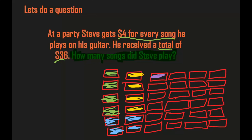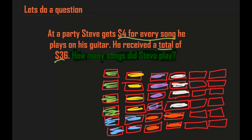Continuing with more sets of four: next is purple — 1, 2, 3, 4. Then orange — 1, 2, 3, 4. Then white — 1, 2, 3, 4. Then pink — 1, 2, 3, 4. Then brown — 1, 2, 3, 4. And finally gray — 1, 2, 3, 4.